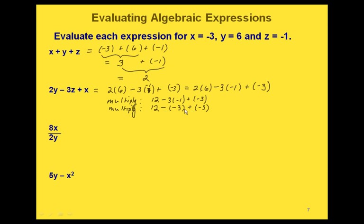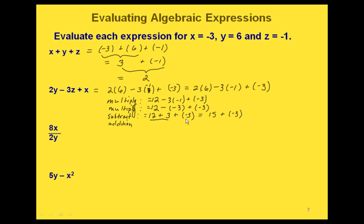Now all we have left is a subtraction and an addition, so we do those from left to right. We rewrite the subtraction as an addition: 12 plus the opposite of negative 3 is positive 3, giving us 15. Then our last step is the addition: 15 plus negative 3 gives us 12. So our final answer is 12.